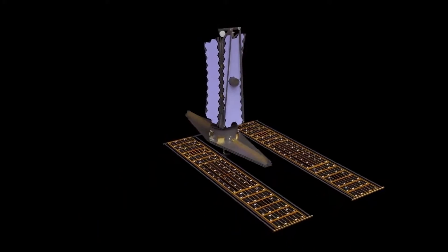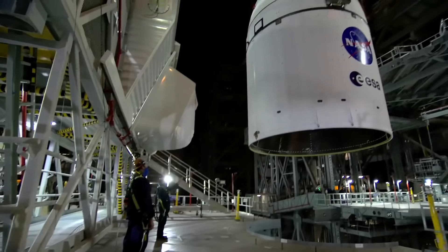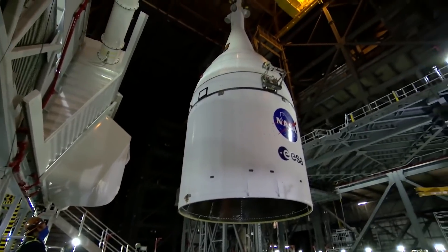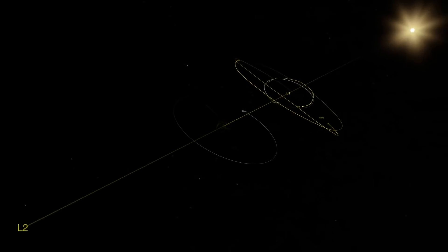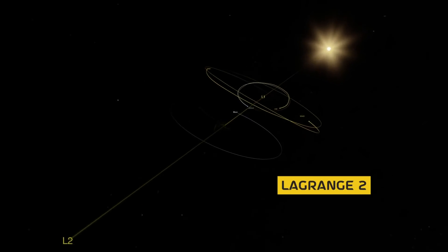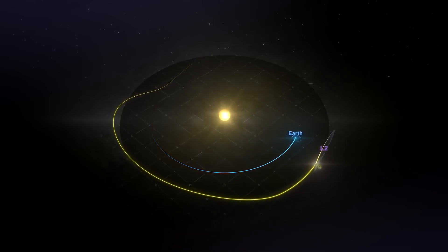If funded, the LUVOIR would launch in 2039, using a heavy launch vehicle, and it would be placed in an orbit around the Sun in Lagrange 2, the same area as the JWST is currently orbiting.